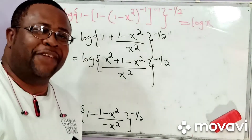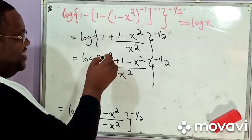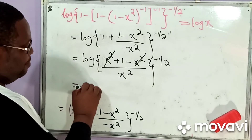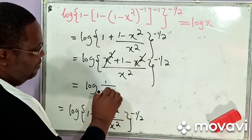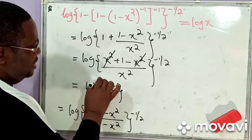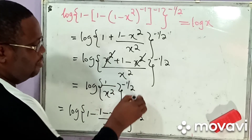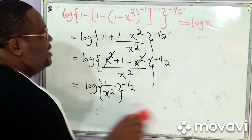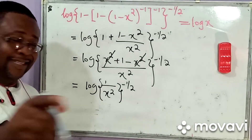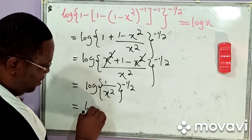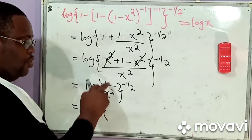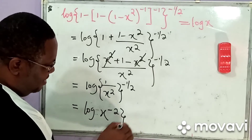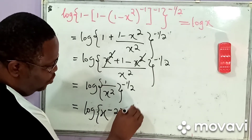Voila. And we keep moving. Now, notice that this x squared will cancel that x squared. So what do we now have? We simply have the logarithm of 1 all over x squared, all raised to the power negative 1 over 2. Now, 1 over x squared can be written as x to the minus 2. Okay — then we now have the whole of this to the power minus 1 over 2.